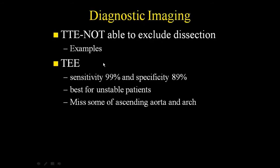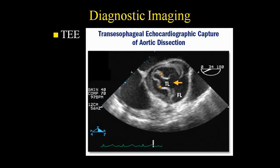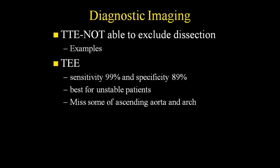TEE is very sensitive and fairly specific. The downside is that you have to mobilize patients and it misses a bit of the ascending aorta into the arch, so it's not always the first-line diagnostic test. If someone has creatinine of 4 and isn't on dialysis yet, it's challenging. CT is usually fastest and easiest — you can do it right out of the ER, and it's better than putting an unstable patient in an MRI machine.